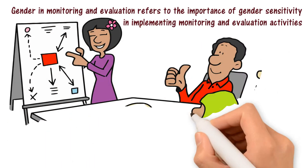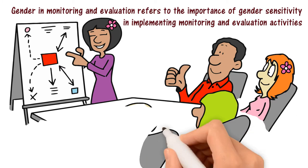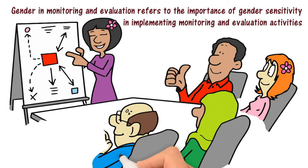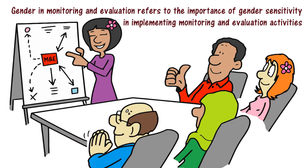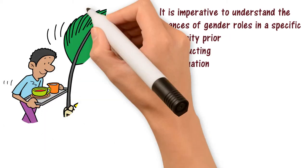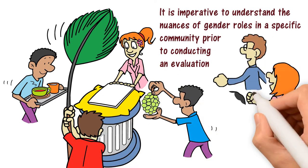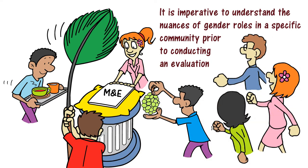Gender in M&E. Gender in monitoring and evaluation refers to the importance of gender sensitivity in implementing, monitoring and evaluation activities. It is imperative to understand the nuances of gender roles in a specific community prior to conducting an evaluation.